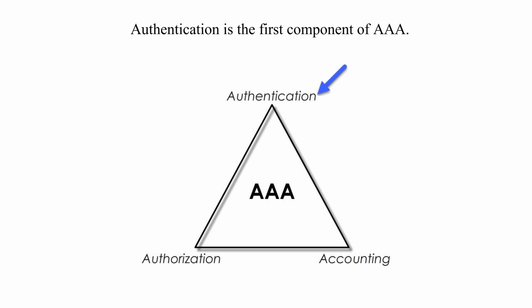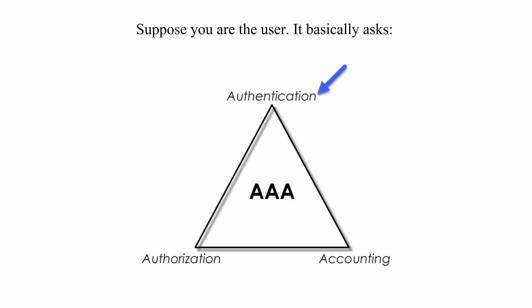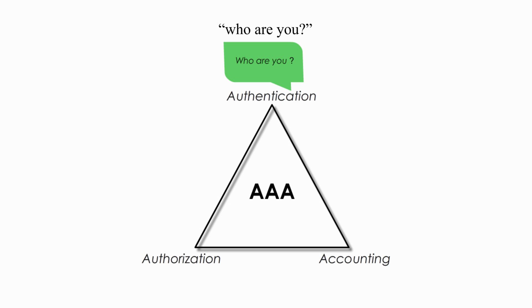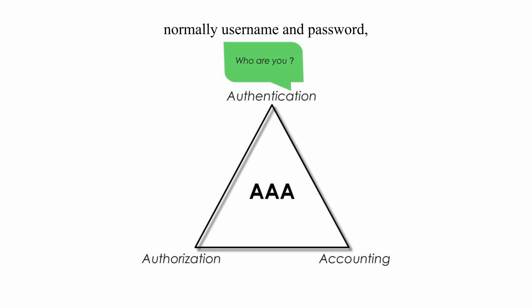Authentication is the first component of AAA. Suppose you are the user — it basically asks who are you. You need some credentials, normally username and password, to verify your identity.